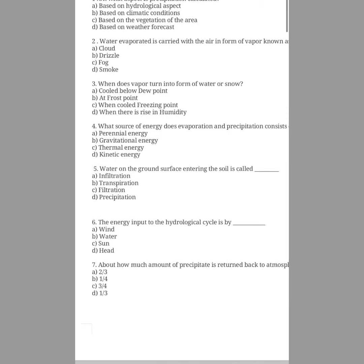Question number five: what process of water on the ground surface entering the soil is called? The options are infiltration, transpiration, filtration, and precipitation. The answer is infiltration, because infiltration is the process by which water on the ground surface enters into the soil. The infiltration rate in soil science is a measure of the rate at which soil is able to absorb rainfall, measured in inches per hour or millimeters per hour.